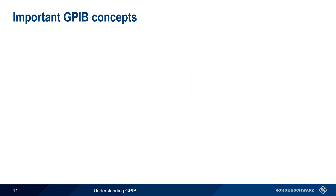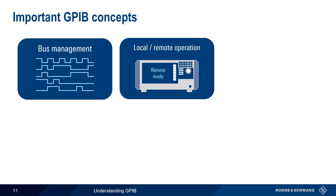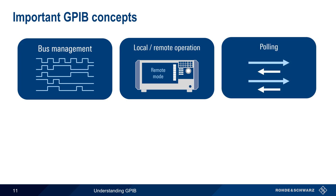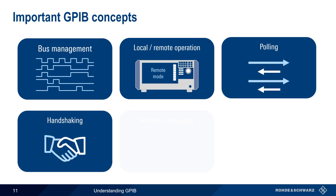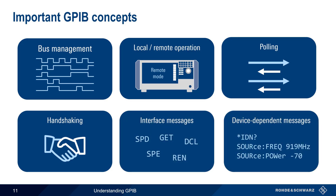Next, let's take a look at some of the more important concepts in GPIB. These are bus management, local and remote operation, polling, handshaking, interface messages, and device-dependent messages. We'll only provide a general introduction to each of these concepts, so please see the GPIB specification if you'd like more detailed information.